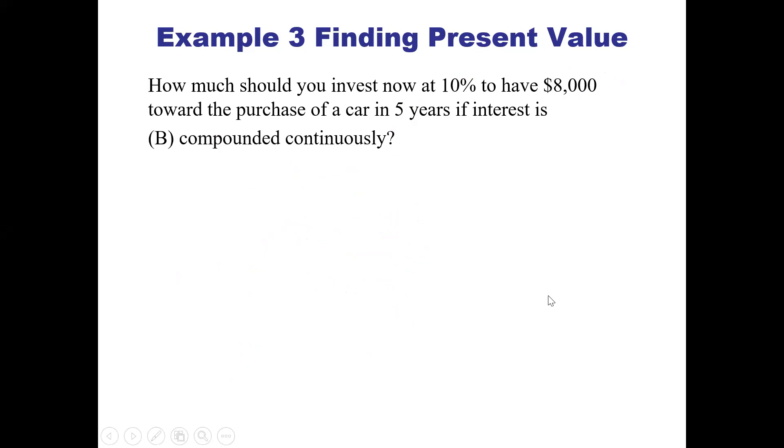What if we want to do continuous compounding? For continuous compounding, we have A equals P times e to the rt. So we want $8,000 equals P times e to the 0.1 times 5.